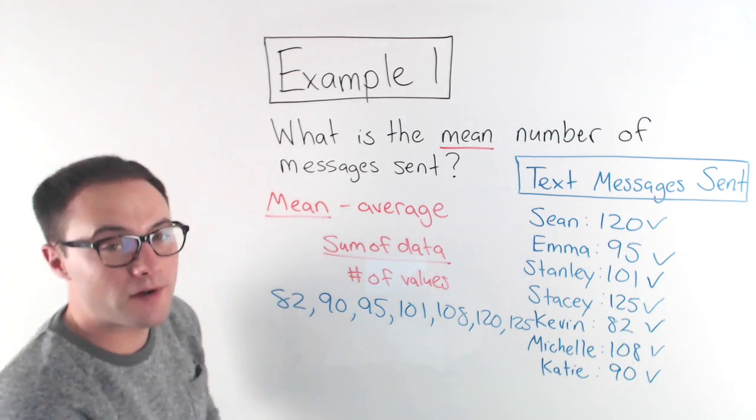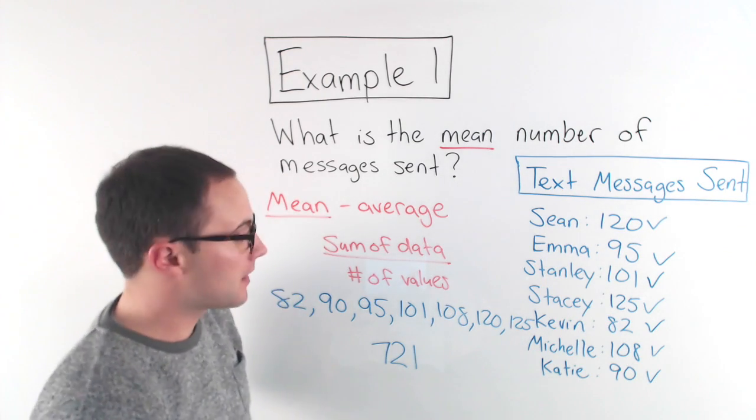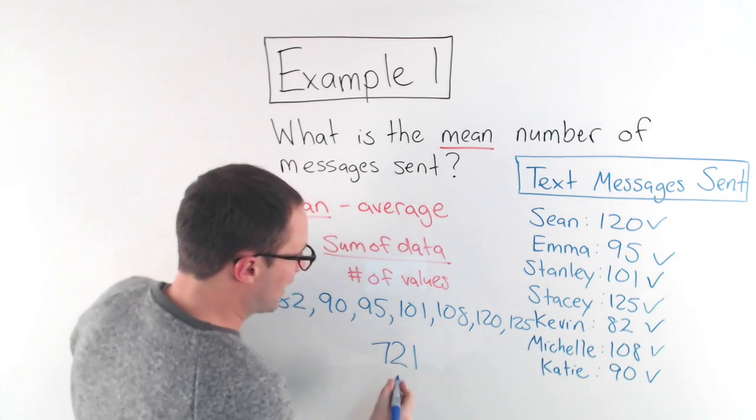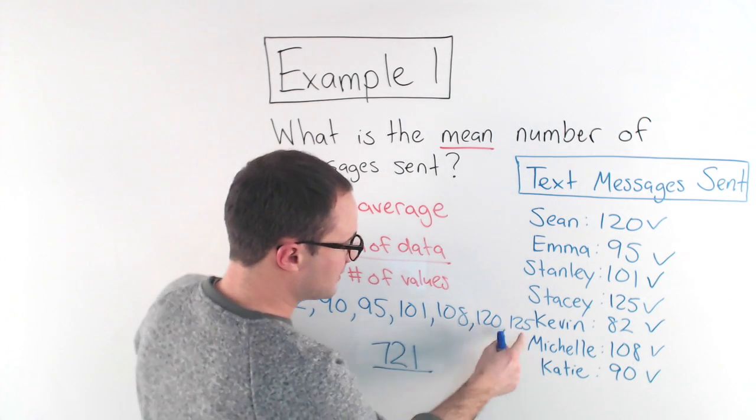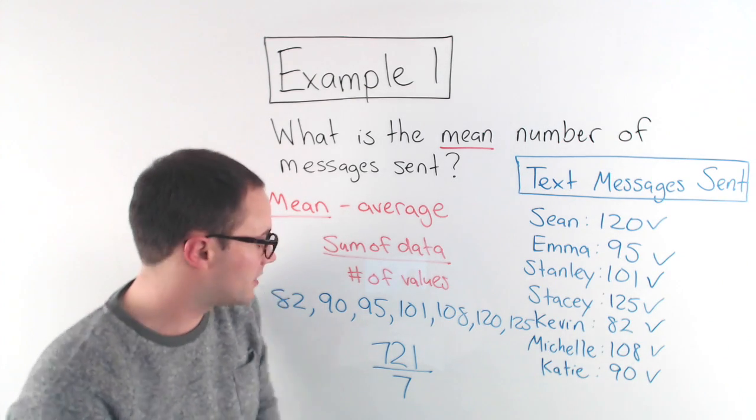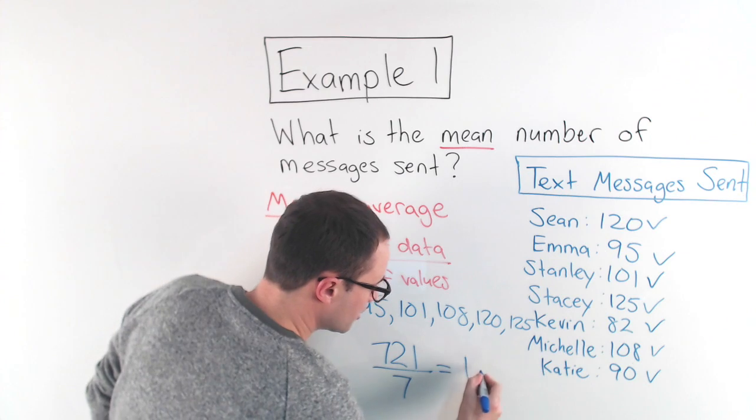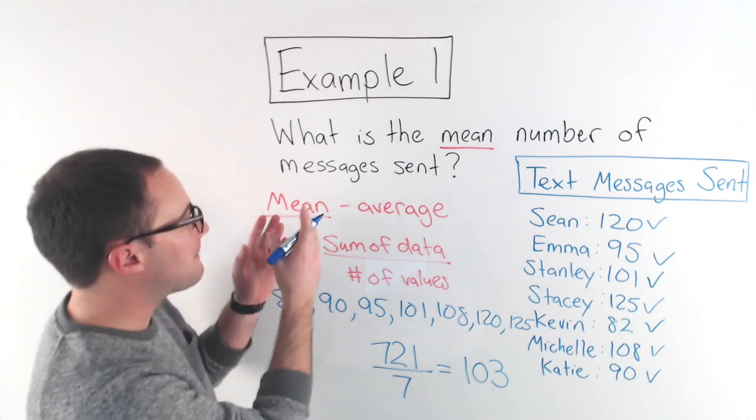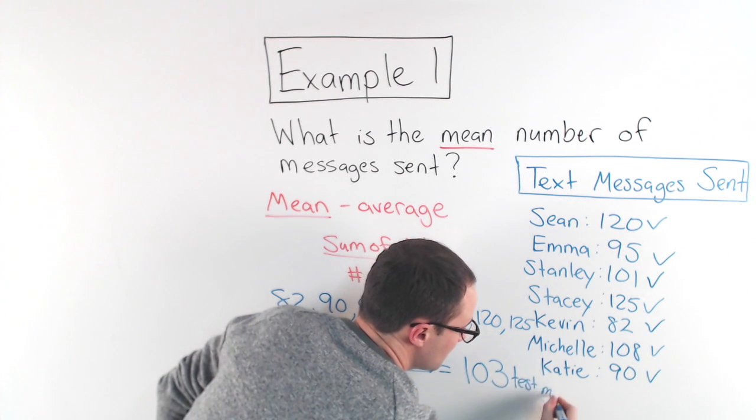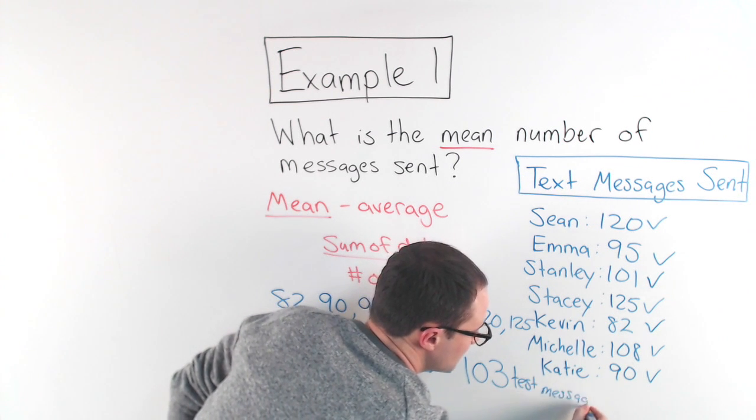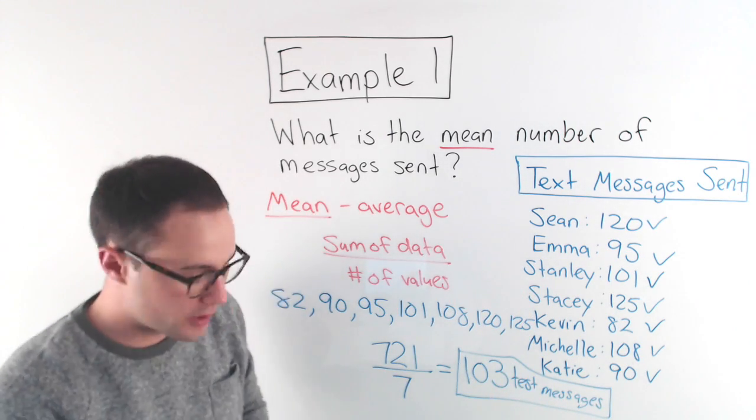Now I'm going to add them, I'm going to find the sum. I've got 721 as my sum. Now I just divide it by the number of values. There were 1, 2, 3, 4, 5, 6, 7. So 721 divided by 7, when I divide, that's going to give me 103. So my mean is 103 text messages. Again, that's like the average, 103 text messages.